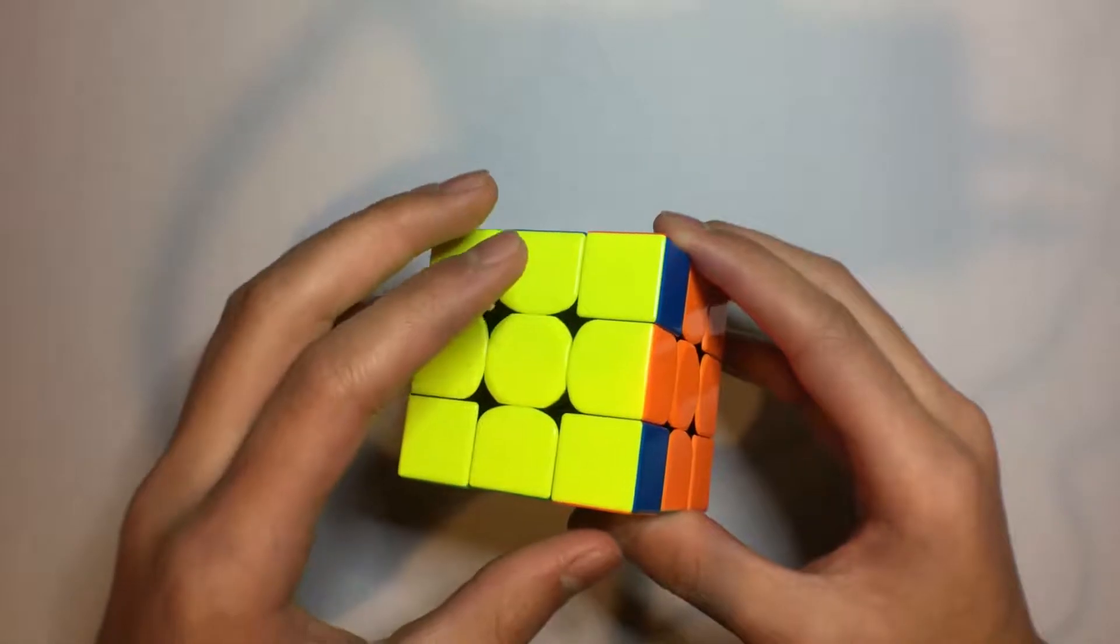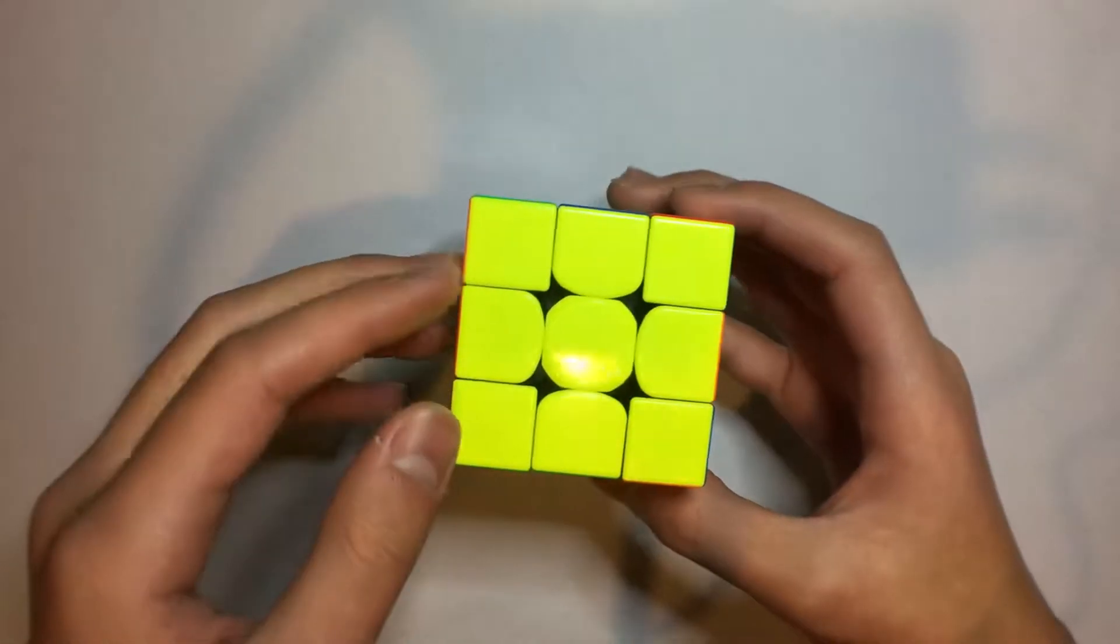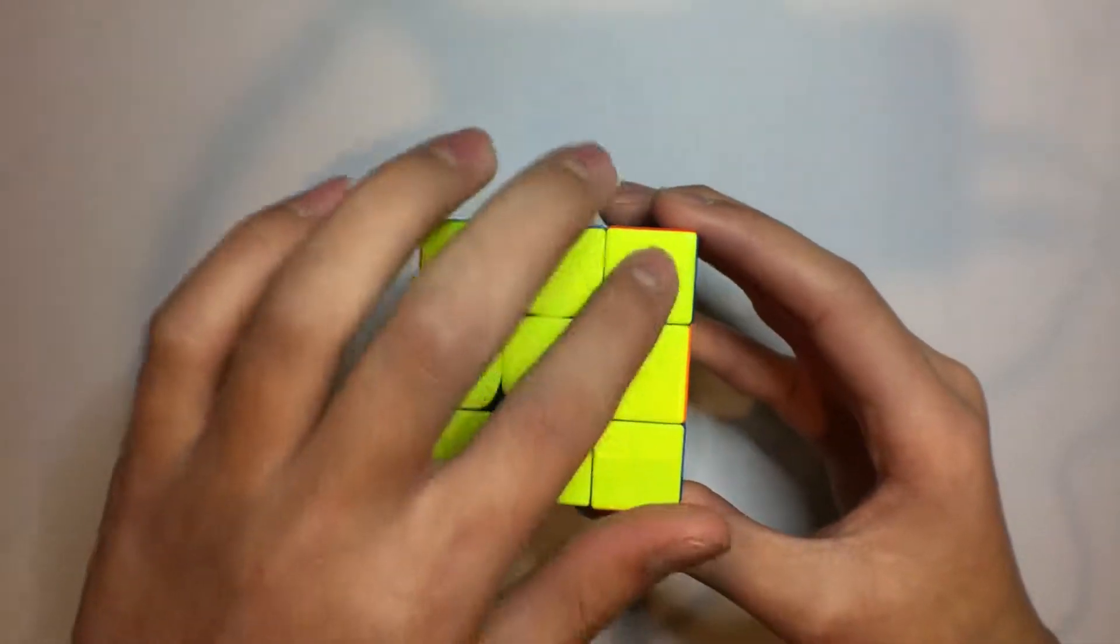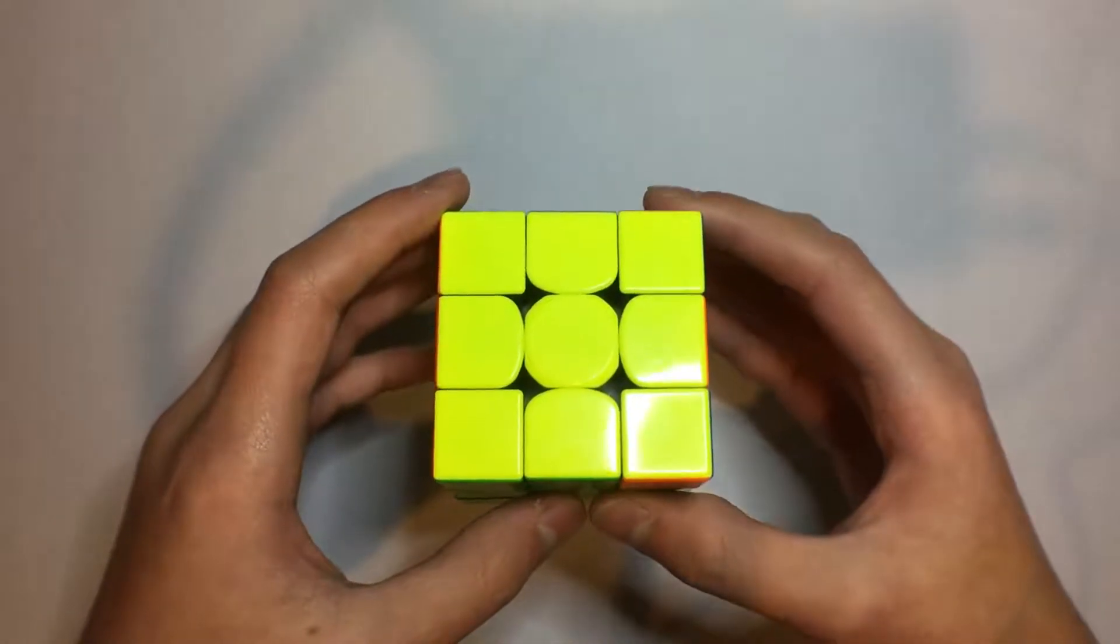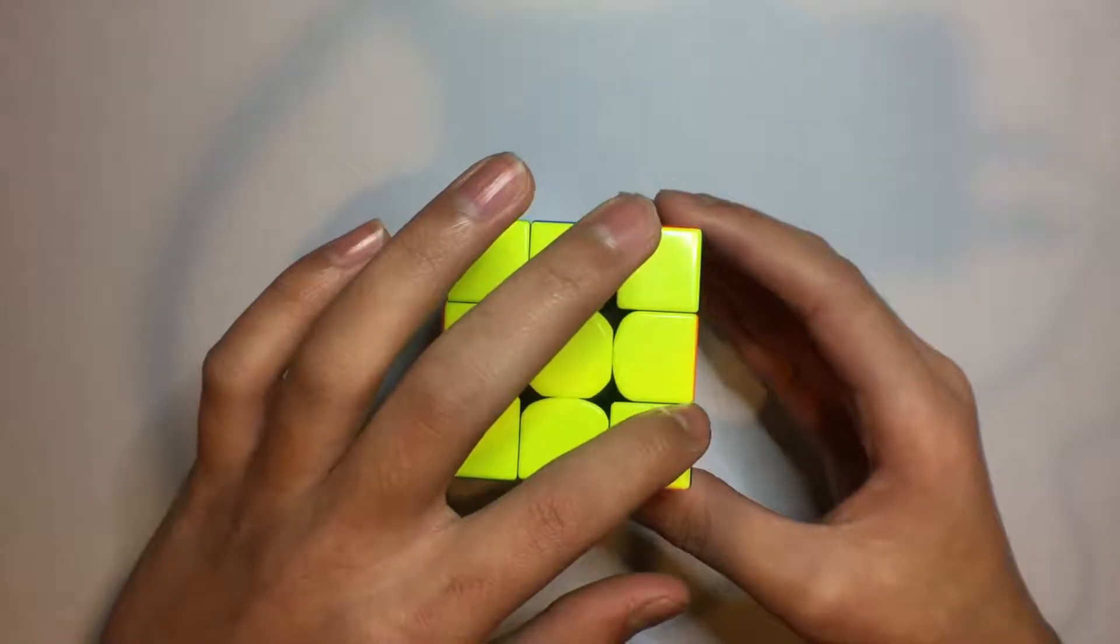This algorithm is a lot like the algorithm I showed you yesterday, in the sense that it also cycles these three corner pieces. The difference is, this algorithm cycles the pieces counterclockwise.